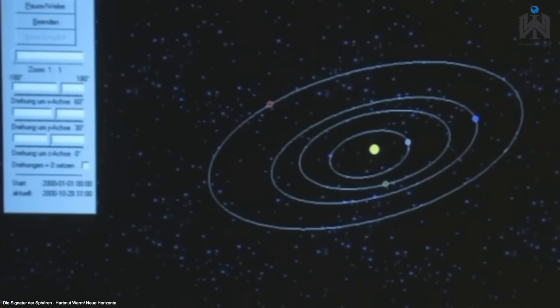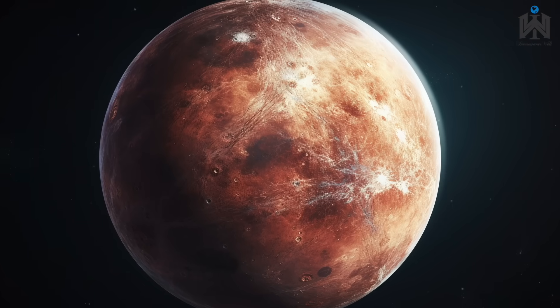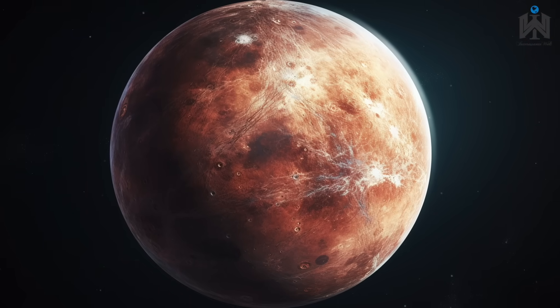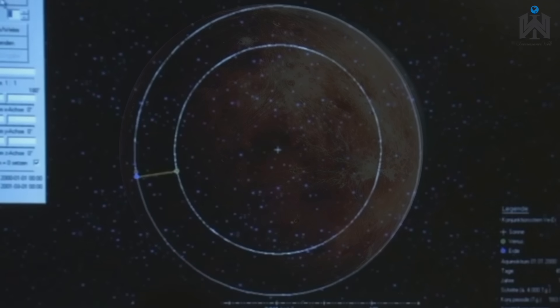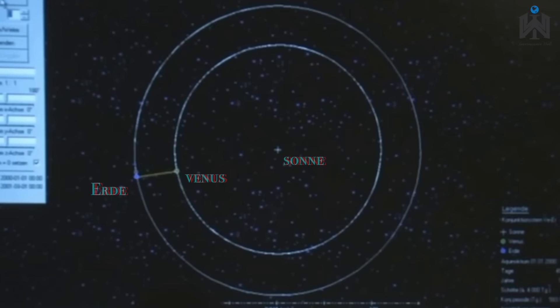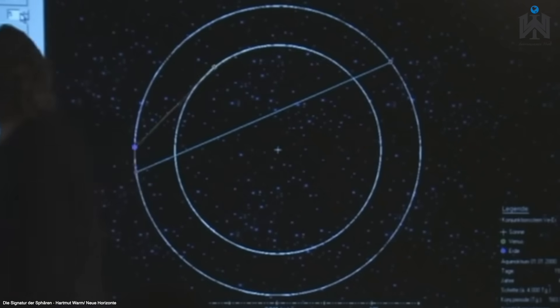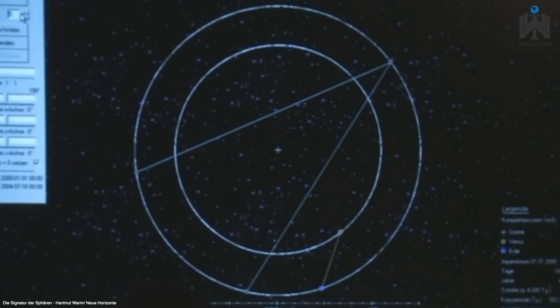Er vergleicht beispielsweise die Erde mit der Venus und schaut sich die sogenannten Konjunktionen an. Das sind die Punkte, an denen die Sonne mit diesen beiden Planeten in einer Linie steht und den kürzestmöglichen Abstand zueinander haben. Diese Konjunktionen im Zeitverlauf werden nun miteinander verbunden. Nach acht Jahren, bis diese Konjunktion wieder genau an derselben Stelle auftritt, entstehen insgesamt fünf Konjunktionen, die dann miteinander verbunden ein Pentagramm ergeben.